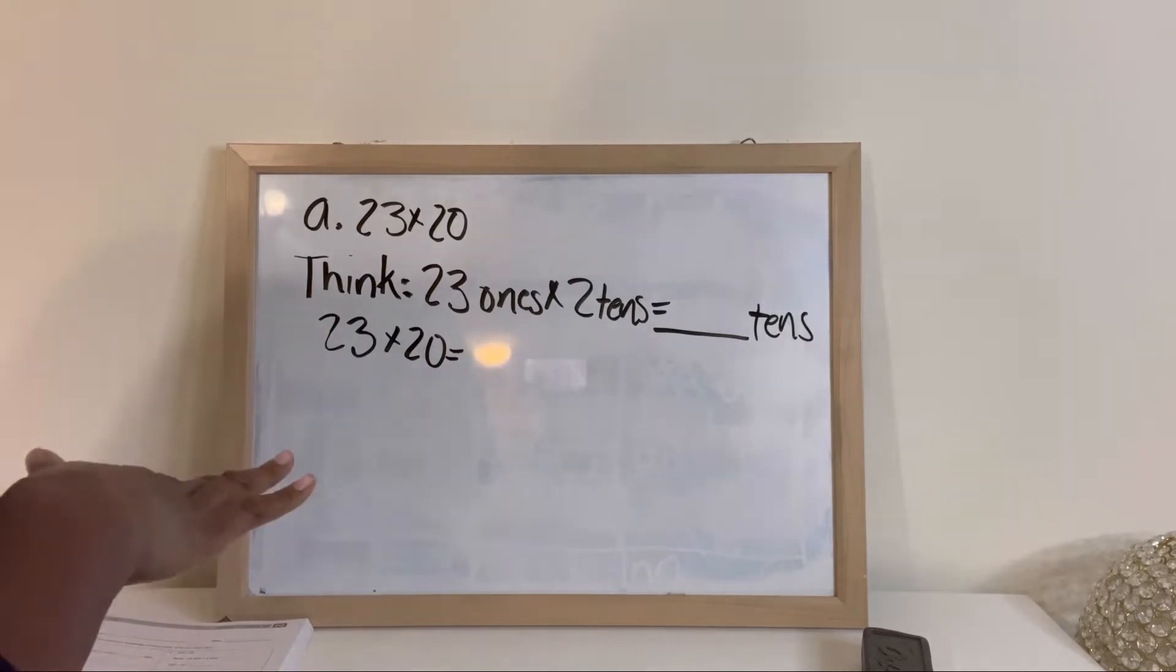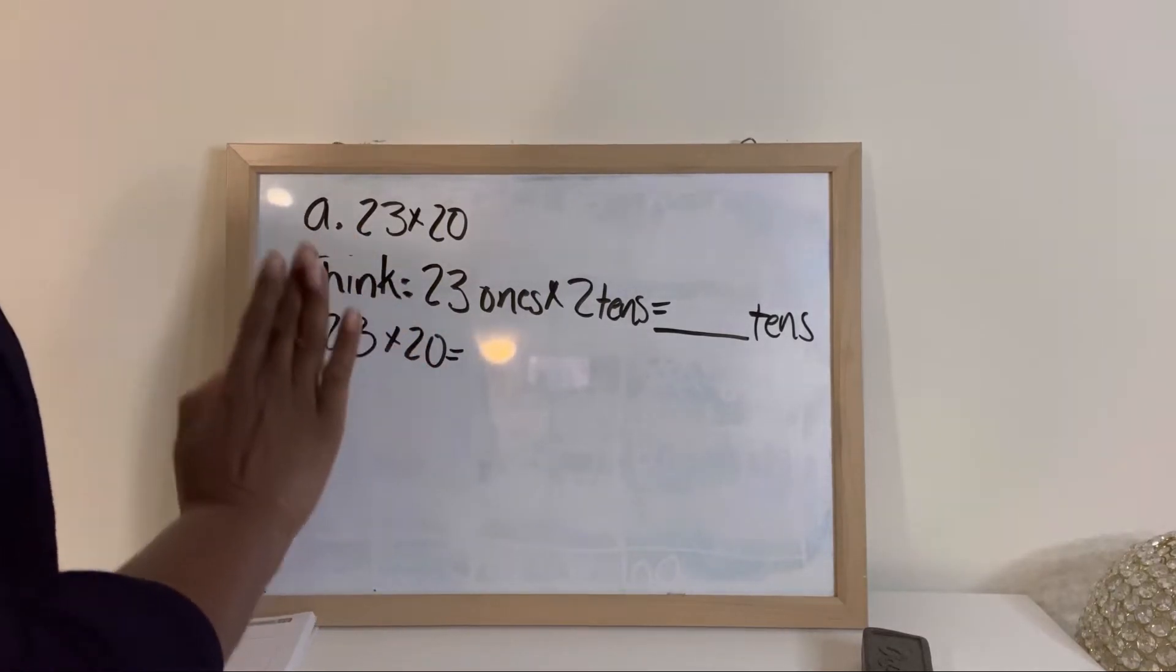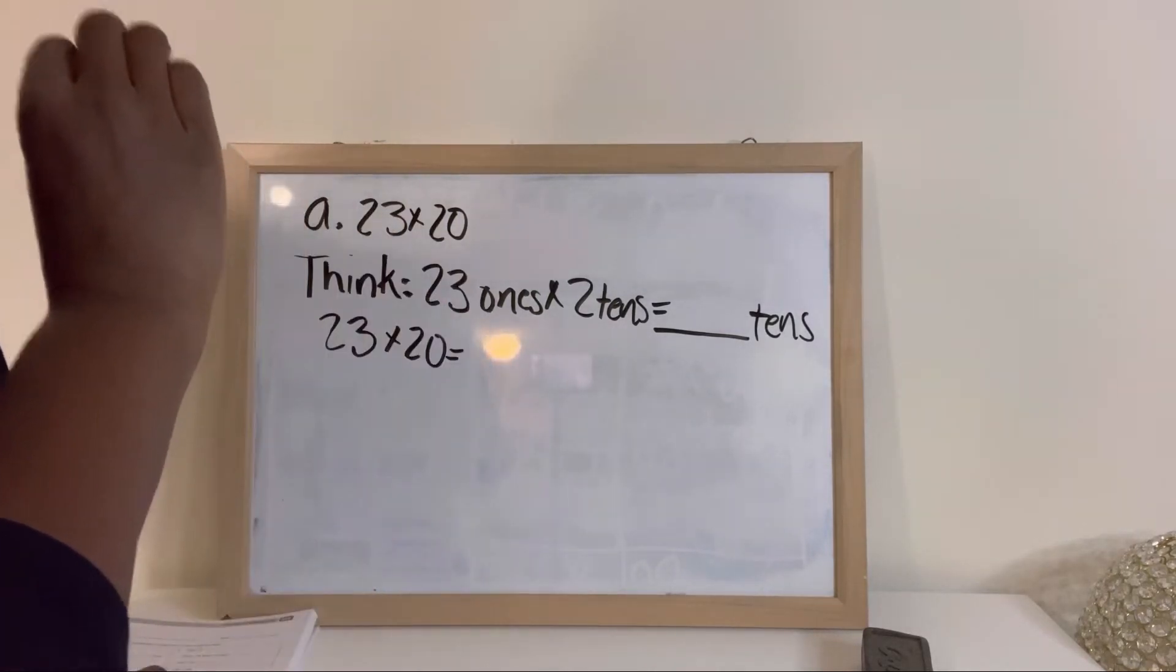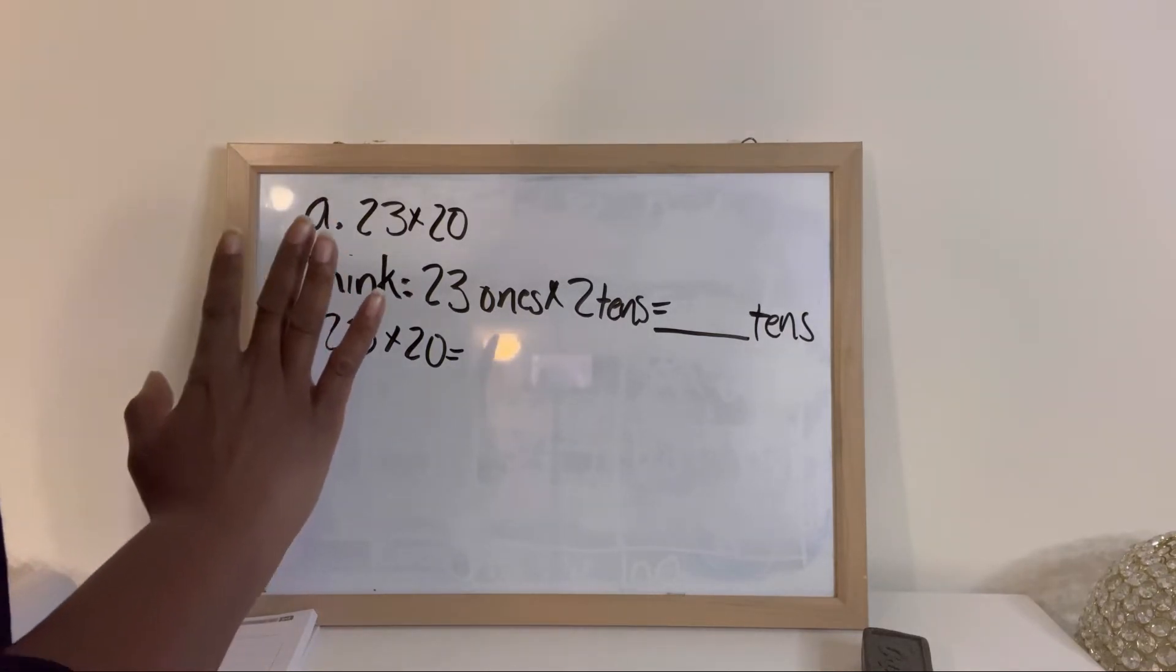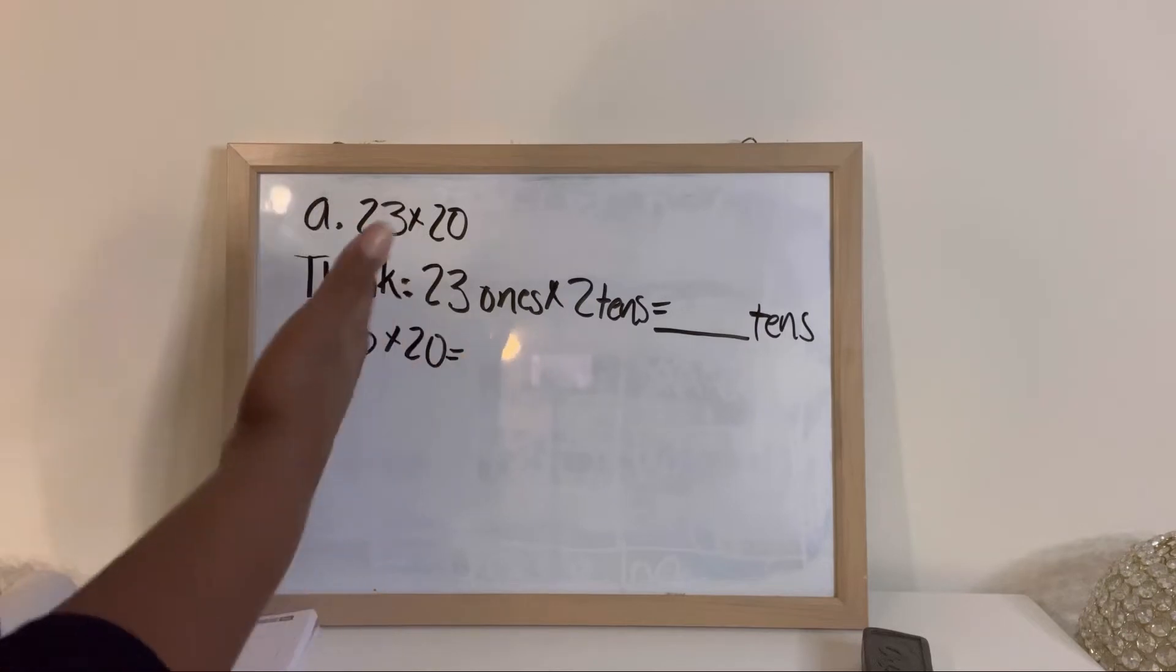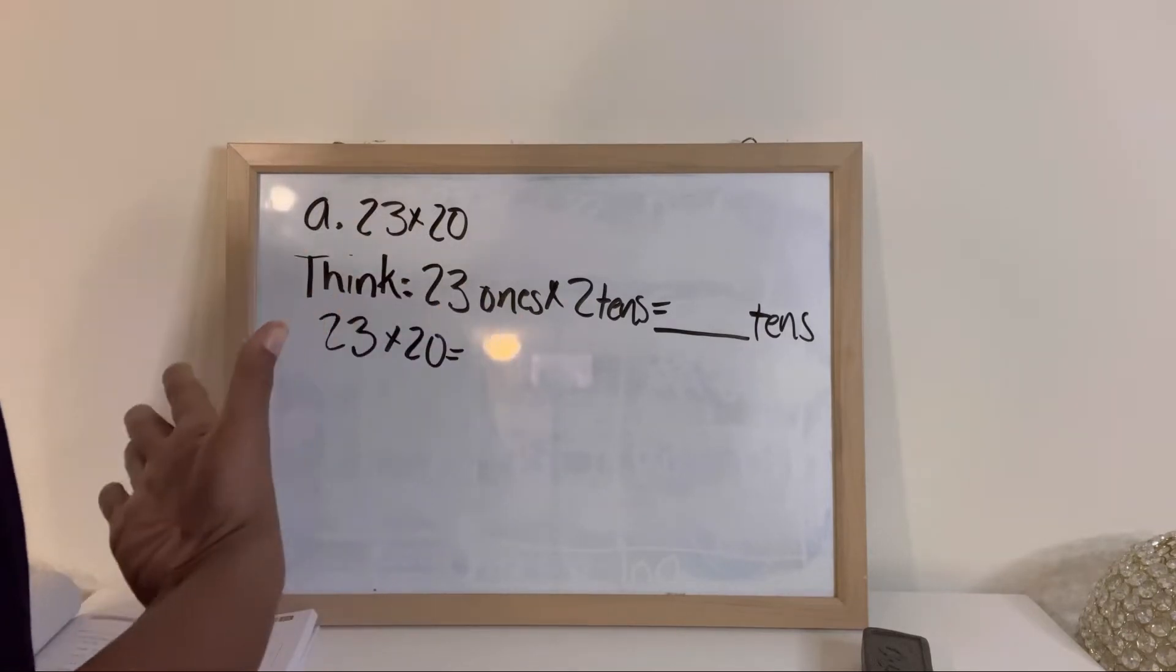If we can get the students to look at this as a unit, we can get rid of the zeros and focus on the digits that are greater than zero, and it makes it easier to do the calculation.